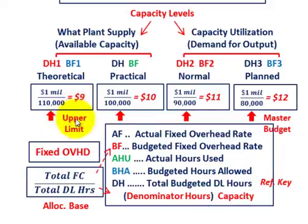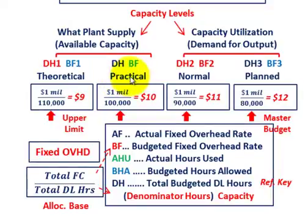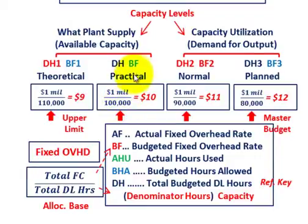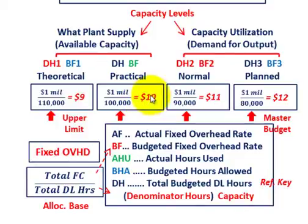This theoretical amount is our upper limit — the maximum we can produce. The next amount for our denominator hours would be the practical amount. In this case let's say it's 100,000 direct labor hours — that's what we can produce at our practical capacity level. Dividing that into one million dollars gives us ten dollars per hour that we're assigning to fixed overhead costs based on each direct labor hour produced.